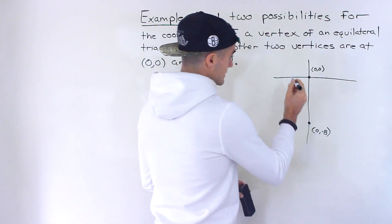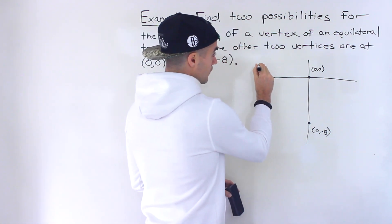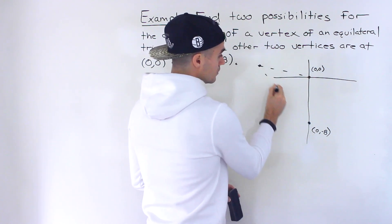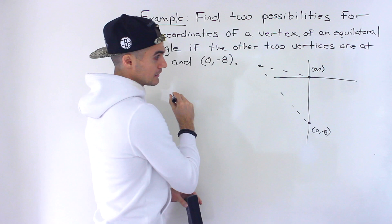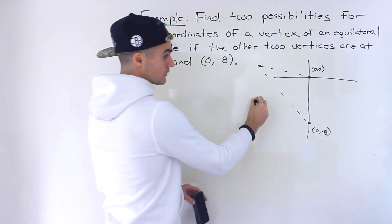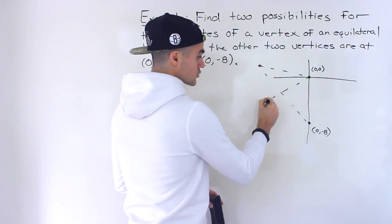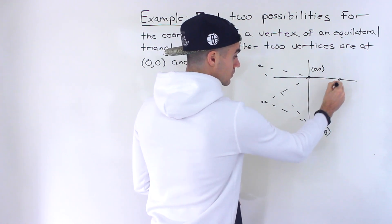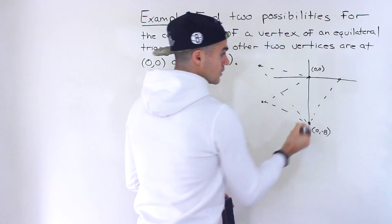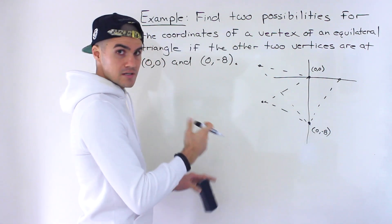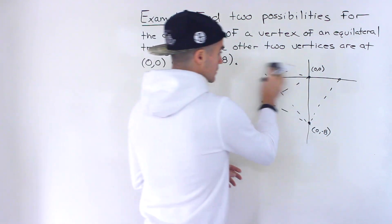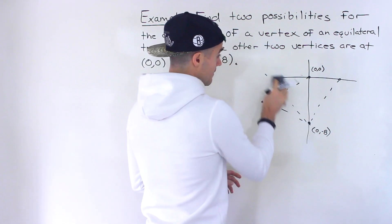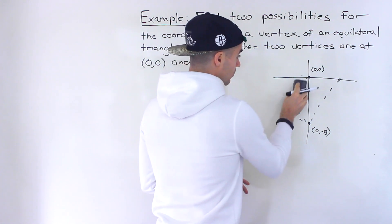Notice that if the other point is like over here, well then the triangle would be like that. Or if it's over here, then the triangle would be like that. Or if it's over here, then the triangle would be like that. So basically that's how we're going to connect these two points and then a potential third point.